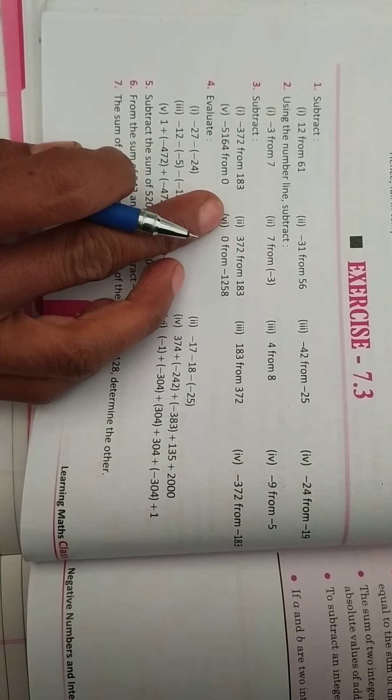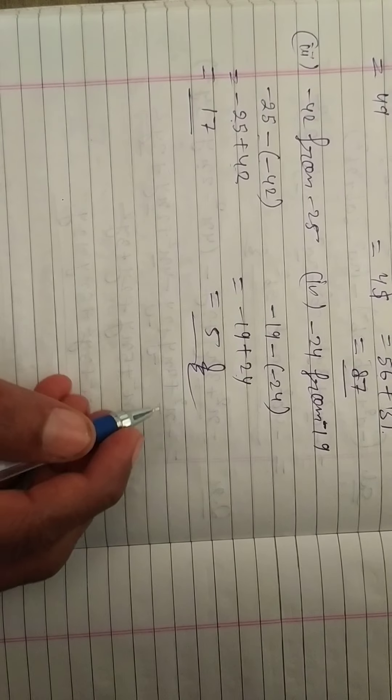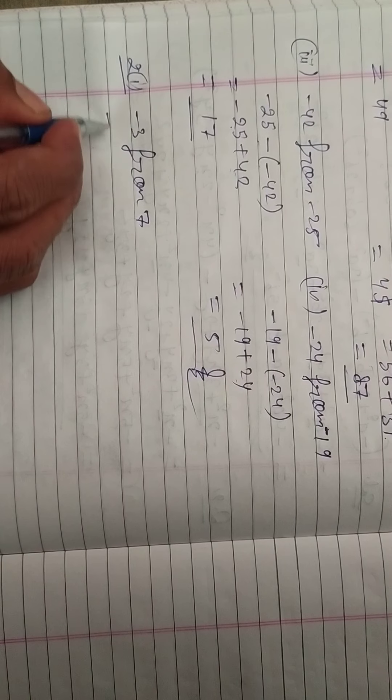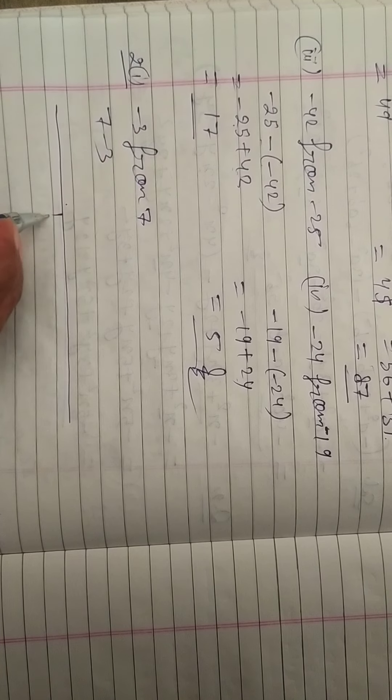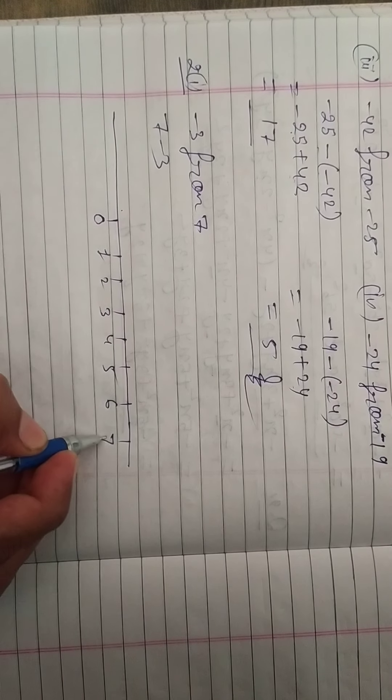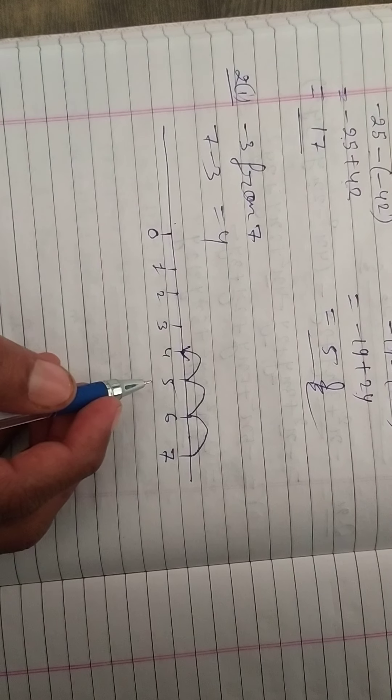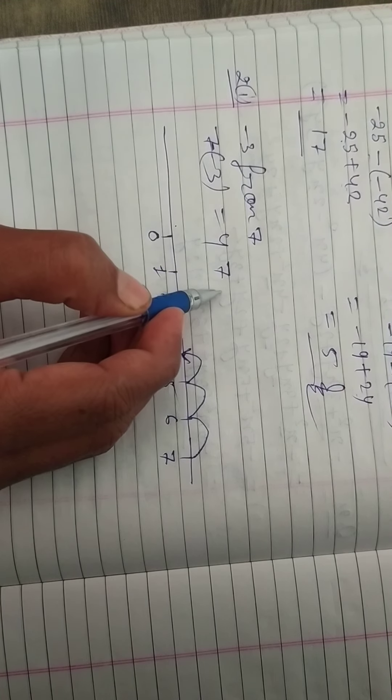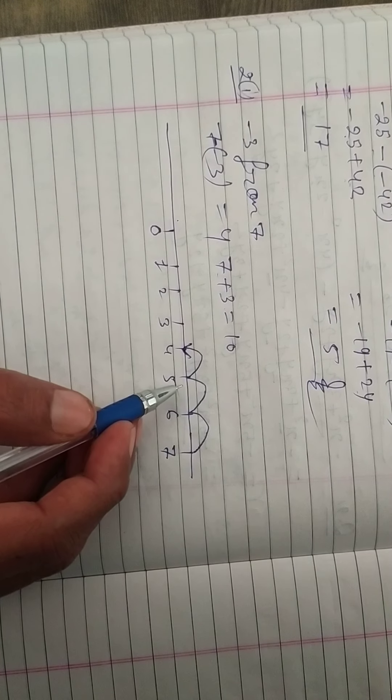That we need to make subtracting the number line of seven. First is 3 from 7, so 7 minus 3. So number line we are going to do 7, so 7 is where we are going to do. 1, 2, 3, 4, 5, 6, 7. So 7 is where we are going to do.